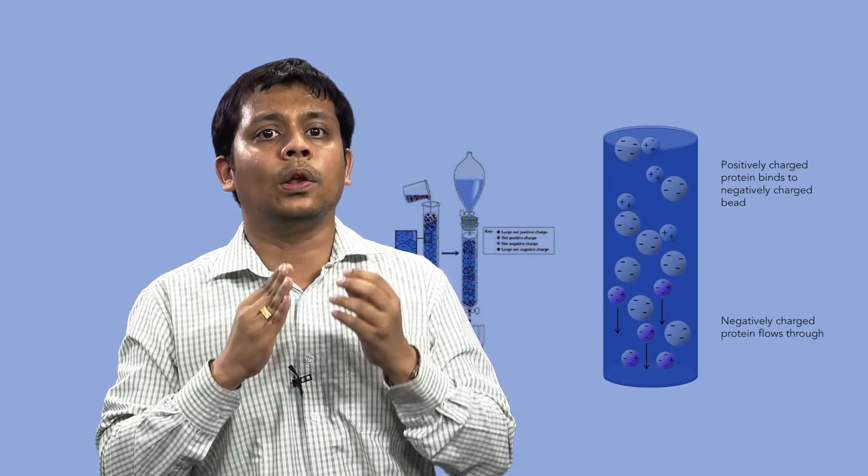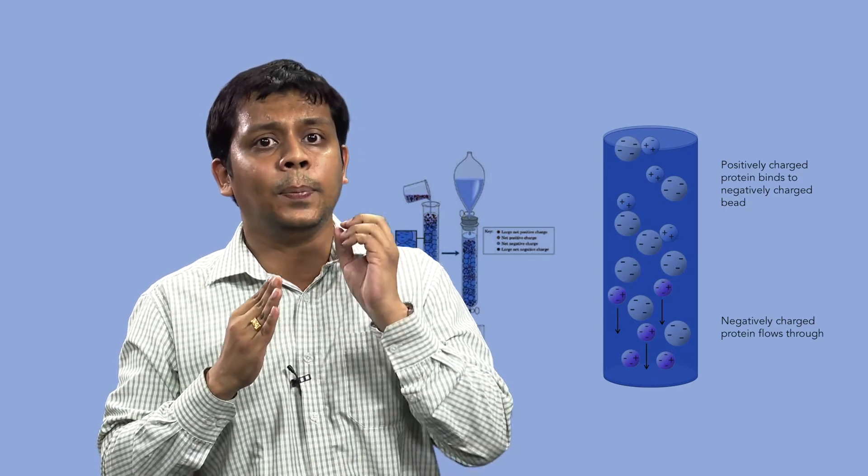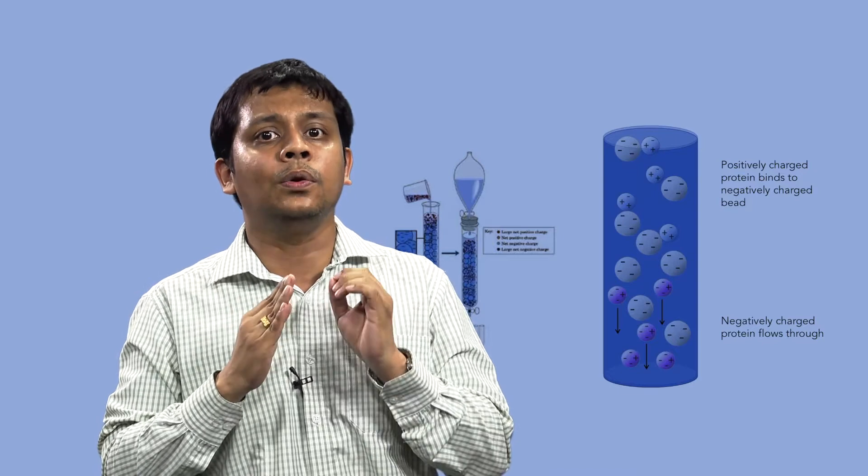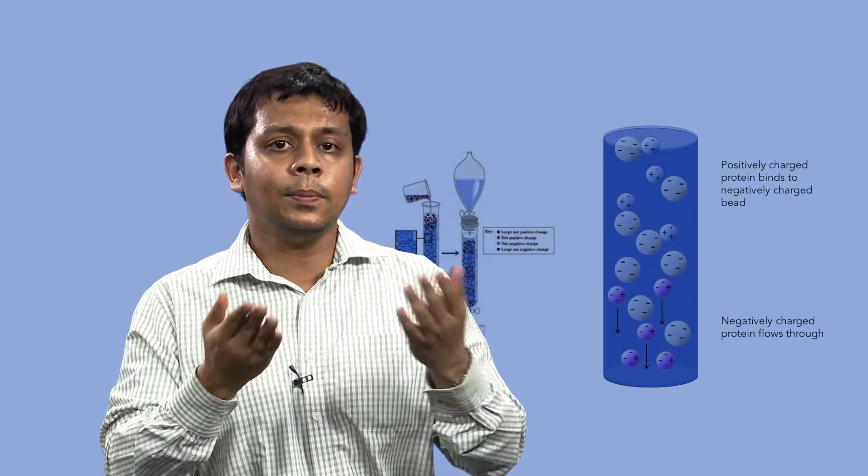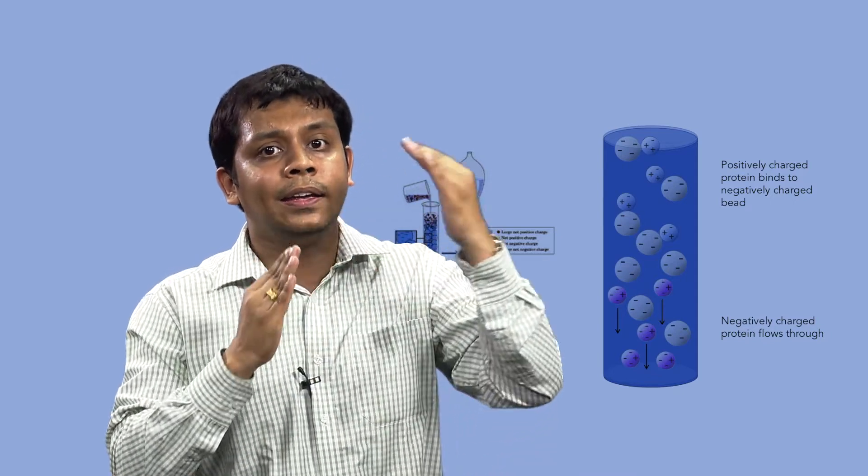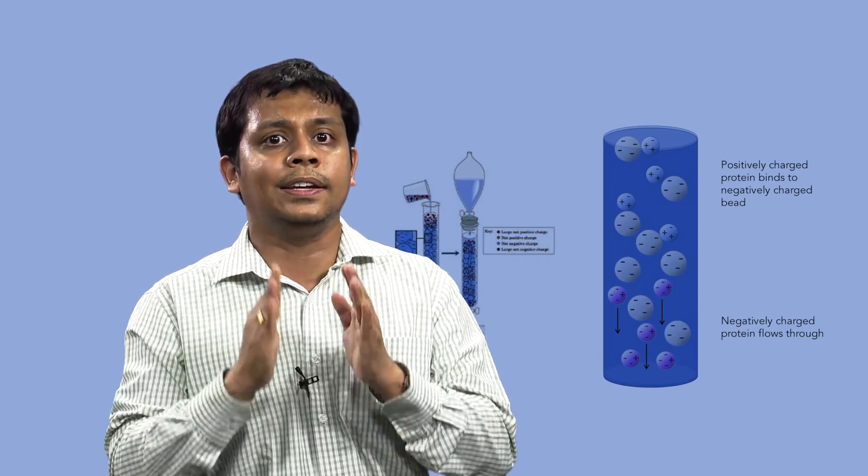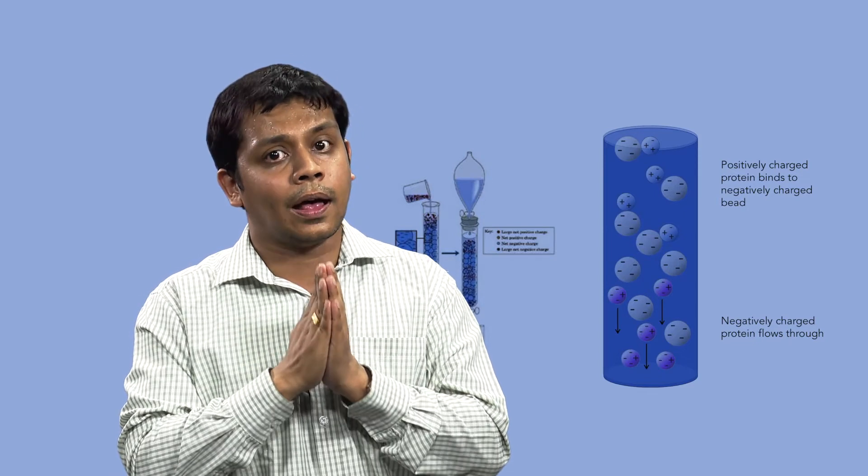The proteins with the lowest net charge at the selected pH will be the first ones eluted from the column as ionic strength increases. Similarly, the proteins with the highest charge at a certain pH will be most strongly retained and will be eluted last.